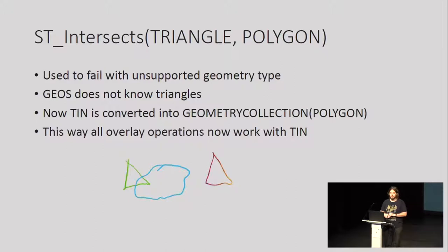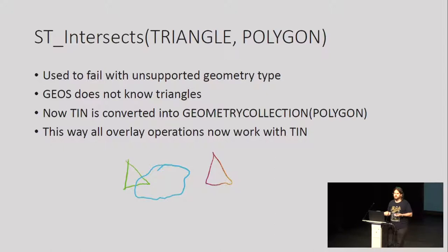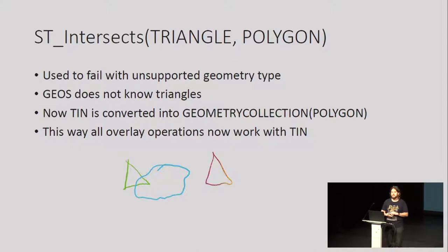To do analytic queries, you'd want the overlay functions to work. GEOS doesn't support triangles, so to make it work we convert them internally into polygons — all the operations are the same, since a triangle is a kind of polygon. Now if you're trying to access something with QGIS, it will work. You can take your TIN table, open it in QGIS with PostGIS 3, and all the triangles will show and pretend they are polygons without crashing. If you manage to break them, please file a ticket before we release version 3.